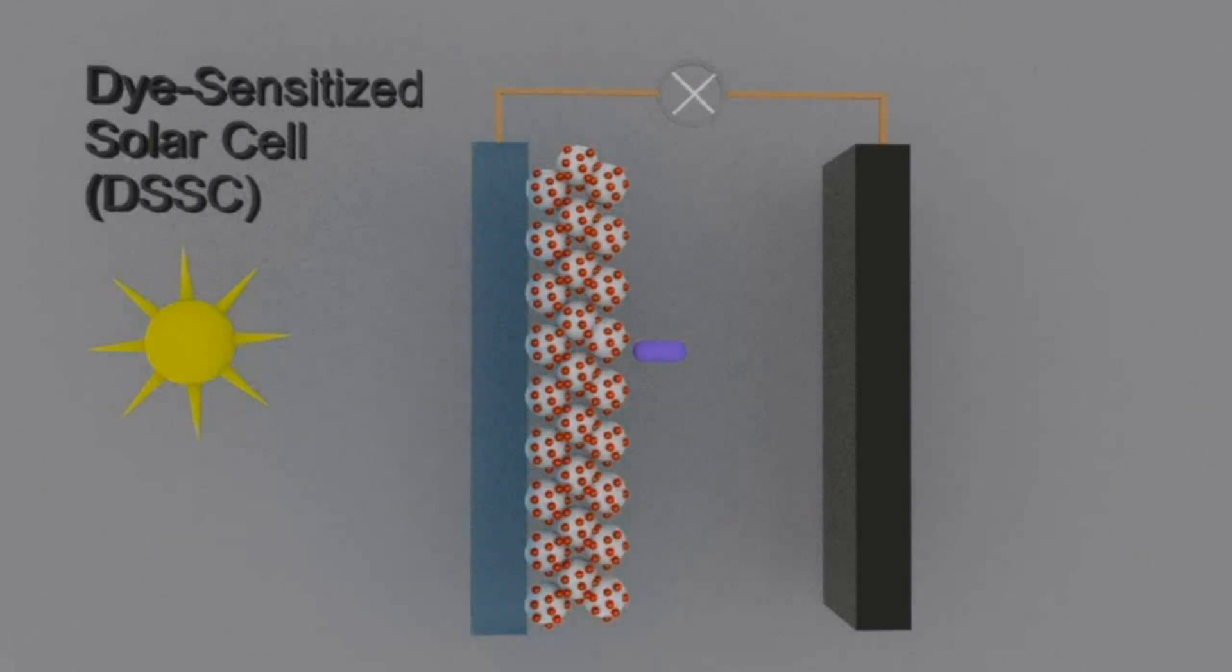So this dye-sensitized solar cell isn't actually as tricky as it looks. Take a look at the simple animation first of all.